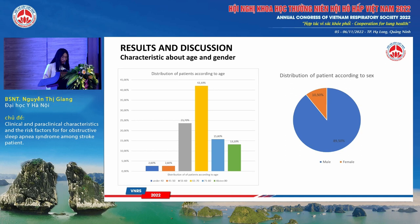Patients aged 61 to 70 had the highest rate, accounting for 42.1% of the total. The lowest age encountered in the study was 24 and the highest was 88. The number of male patients with sleep apnea syndrome was 8.5 times higher than the number of female patients, and the female patients were in menopausal age.